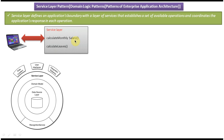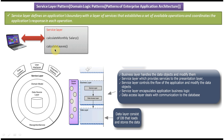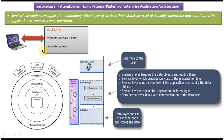The business class calculates the monthly salary for a particular person and returns the result to the service layer. The service layer then returns the result back to the client. This is how it works — the service layer acts as an application boundary and entry point.